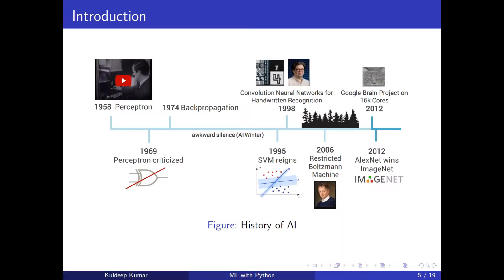There were computational challenges — the hardware and computers couldn't solve all those programs — which led to an AI winter with no funding for a long period. Then around 2000, with new hardware and large datasets from Google, Flickr, Facebook, and others, there was a burst of progress. This rough timeline, starting from a lot of hard work by researchers, is highlighted by the Turing Award given to three of the pioneers of AI.